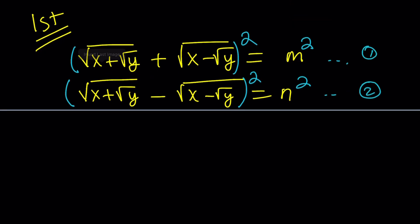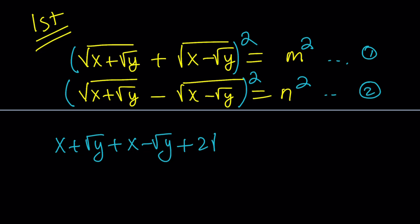In the first expression we have a plus b, so if you use that identity to square it you get a squared plus b squared plus 2ab, and 2ab is just going to give you the square root of x squared minus y from difference of two squares. This expression can only be denested when x squared minus y is a perfect square — otherwise you can't do it.